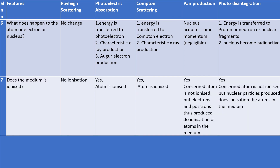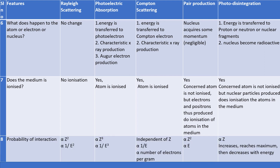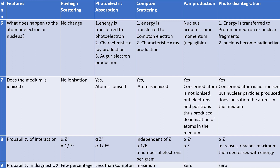Except in Rayleigh scattering, the medium is ionized in all other types of interactions. The probability of Compton scattering is independent of atomic number, while the probability of all other interaction types increases with atomic number. The probability of interaction decreases with photon energy, except in pair production where it increases with energy. In the diagnostic range, Rayleigh scattering contributes nearly 5% of total interactions. Photoelectric effect dominates below 20 kilo-electron-volts in soft tissues, while Compton effect is dominant in the normal diagnostic range. Pair production and photodisintegration do not occur in the diagnostic range.